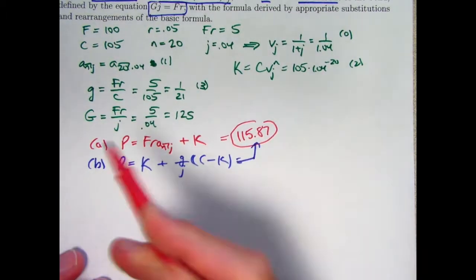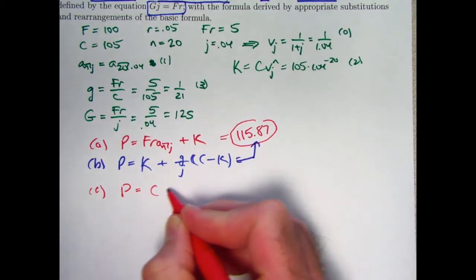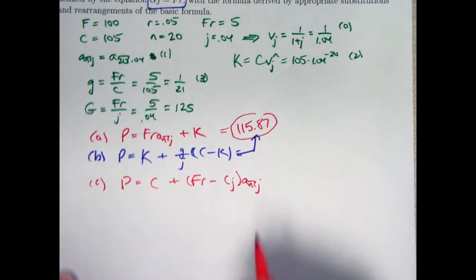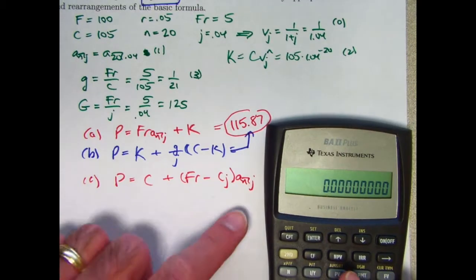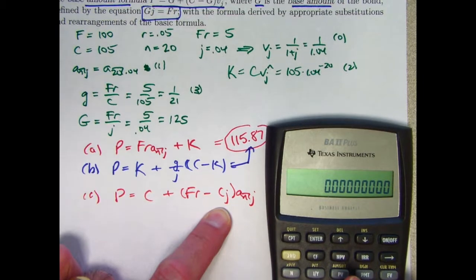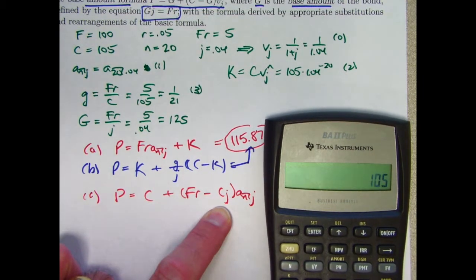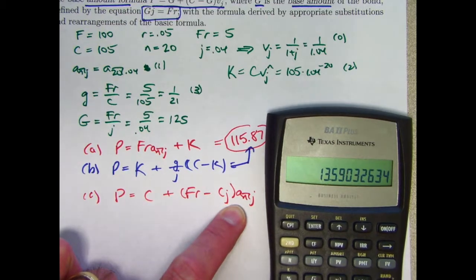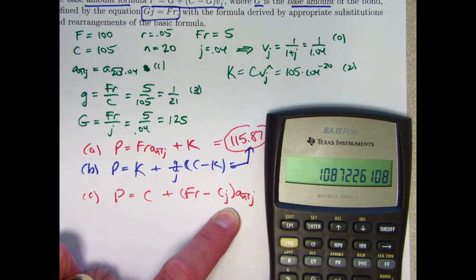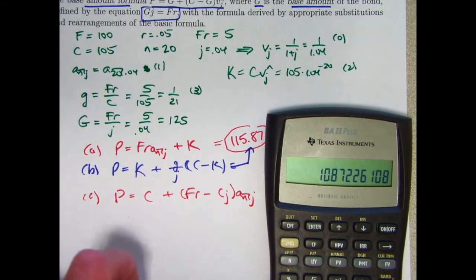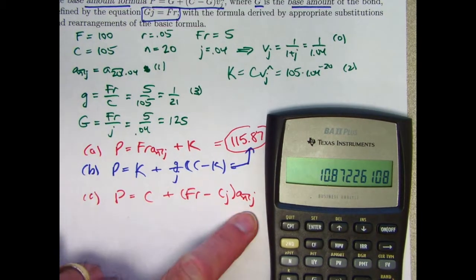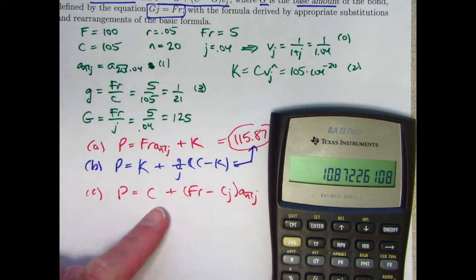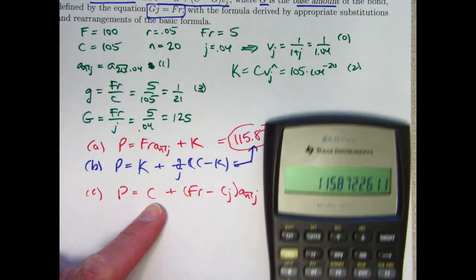We are on to the two new formulas now. Premium discount formula looks like this. Efficient calculator usage. That's kind of complicated. This is a 5. C times J is 105 times 0.04. I think that ends up being 4.2. 105 times 0.04. Yeah, that's 4.2. 5 minus 4.2 is 0.8. AN is in register 1 times 0.8 is a positive quantity. That's why the bond is selling at a premium here, based on this premium discount formula. This quantity is positive. AN, of course, is always positive. But so it's the sign of this that determines whether you're selling at a premium or the opposite, a discount when P is less than C. We add on C to this, C being 105. And we get the same thing, 115.87.